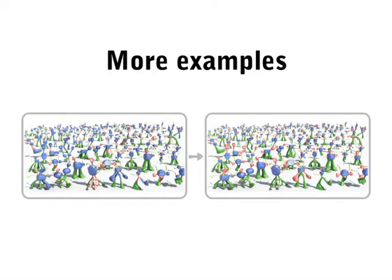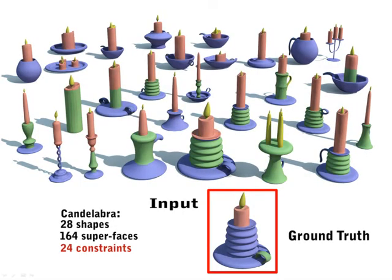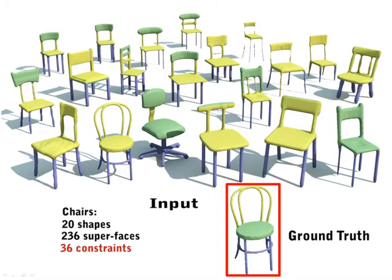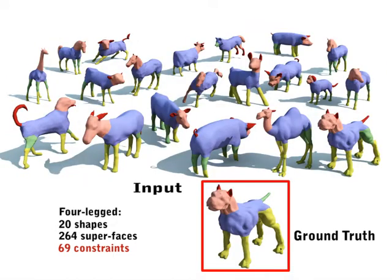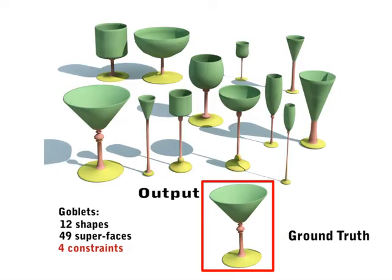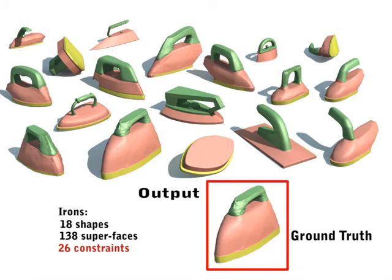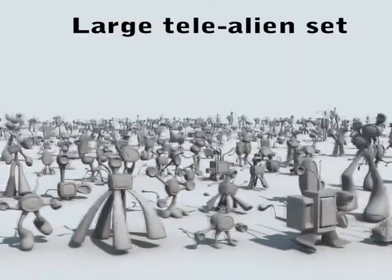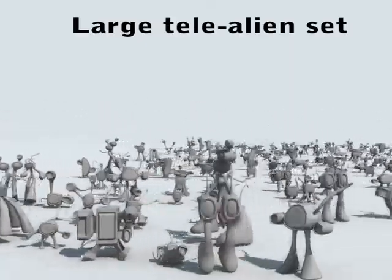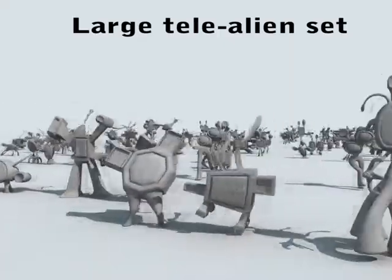Here we show more examples. Our framework assists the user in correcting the clustering towards an error-free co-analysis, refining the co-segmentations for several sets of shapes in an effortless manner.